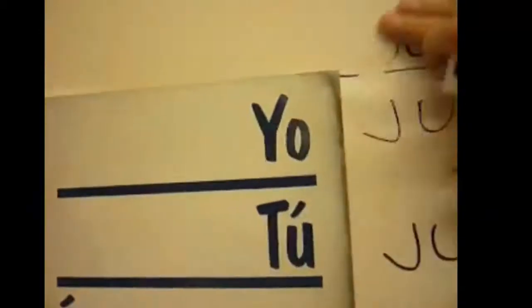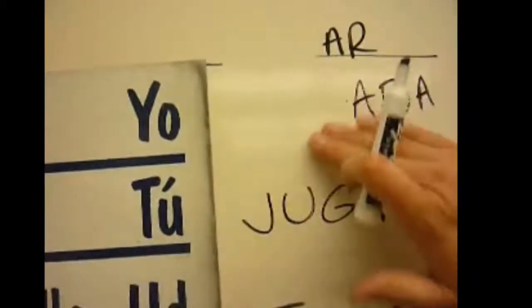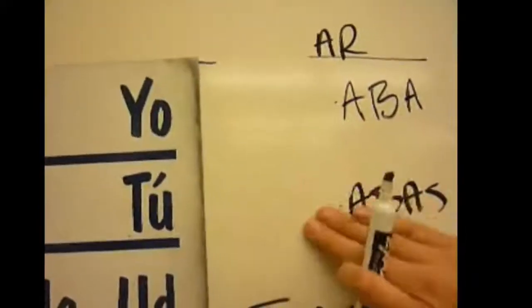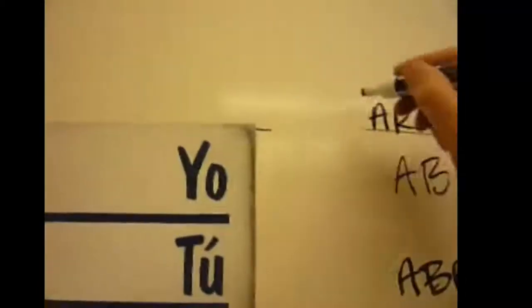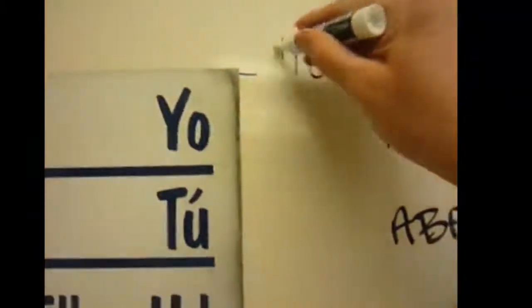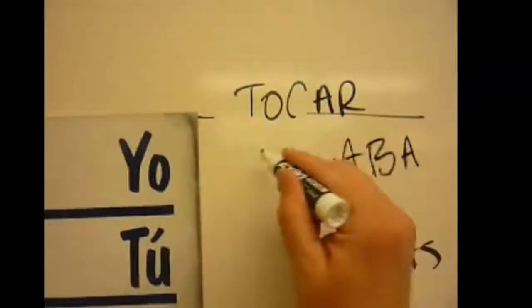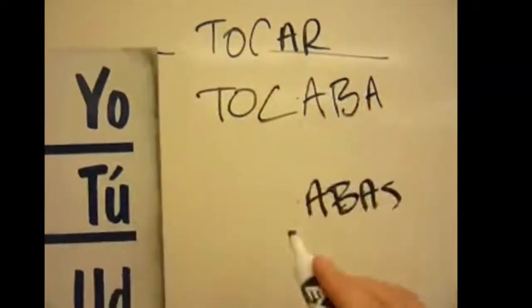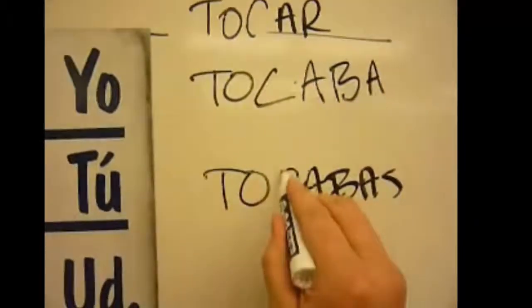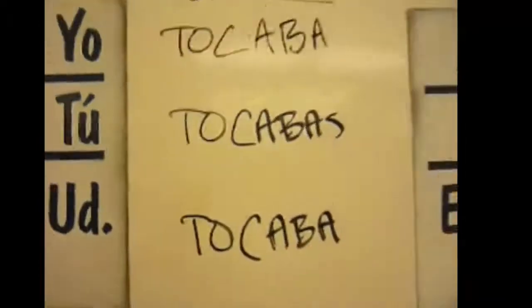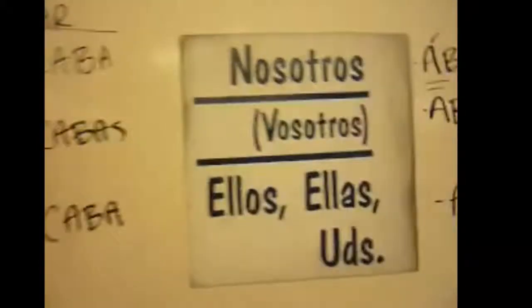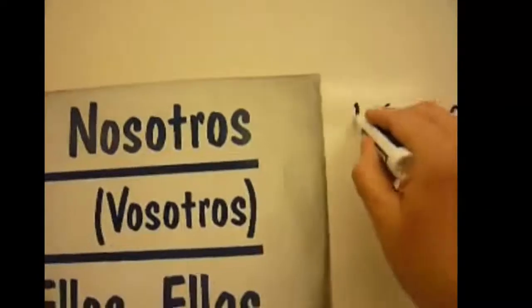Let's take a look at another verb. The imperfect describes things that used to happen or that were happening when something else happened. Tocar — like tocar el piano. Yo tocaba — I used to play. Tú tocabas — you used to play. Él, ella, usted — tocaba. We just use those regular AR endings: aba, abas, aba, ábamos, abais, aban — and add them to the stem of the verb. It's as easy as that.